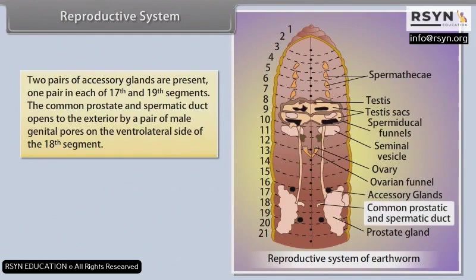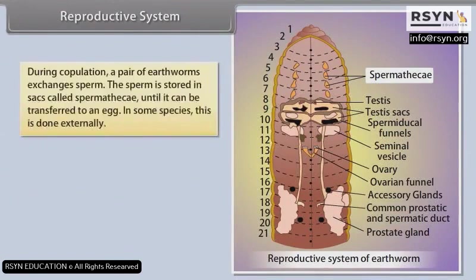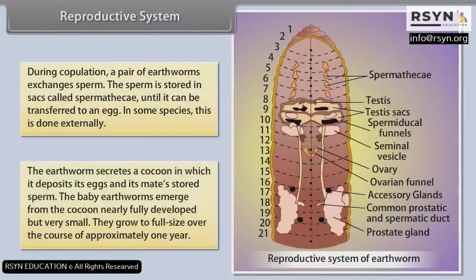The common prostate and spermatic duct opens to the exterior by a pair of male genital pores on the ventrolateral side of the 18th segment. Four pairs of sac-like structures called spermathecae are found in each of the 6th to 9th segments. During copulation, a pair of earthworms exchanges sperm, stored in the spermathecae. The earthworm secretes a cocoon in which it deposits its eggs and its mate's stored sperm. The baby earthworms emerge from the cocoon nearly fully developed but very small.